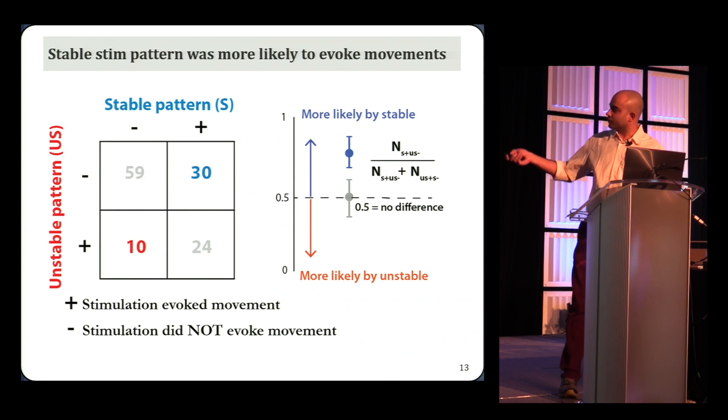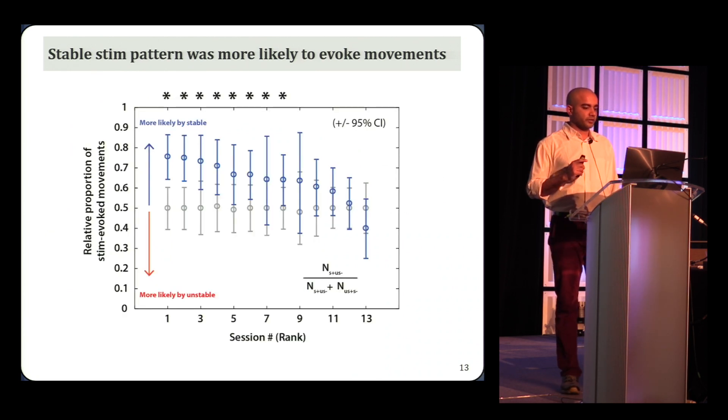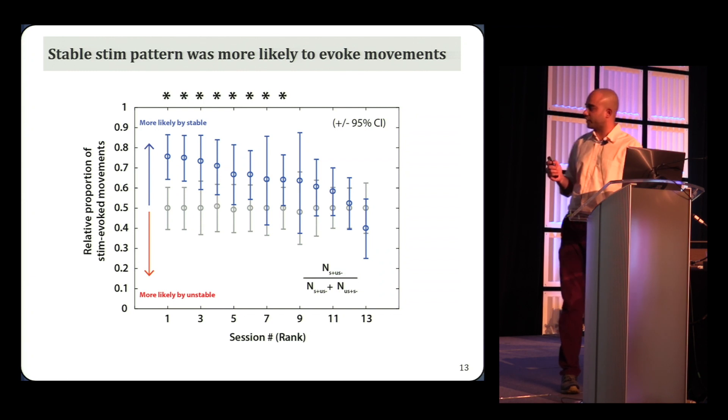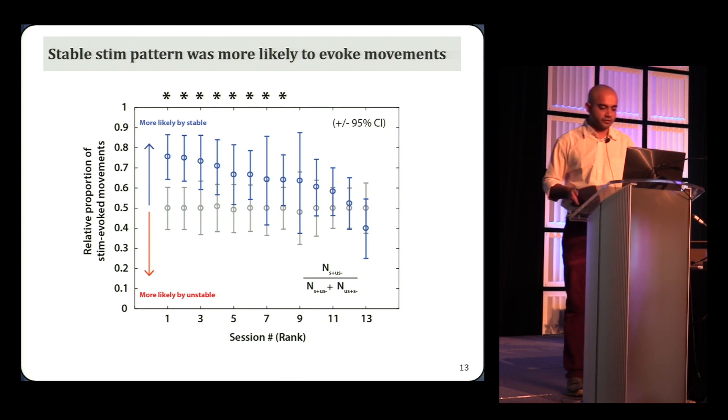We can then plot this for each stimulation session and sort the sessions by effect size. So this is session rank on the x-axis. For most sessions, as you see, the stable pattern was significantly more likely to evoke a movement than the corresponding mean and state-matched unstable pattern. And even when it was not significant, most of these trends were essentially in the upward direction.